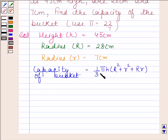Capacity of the bucket is equal to 1 by 3 pi h into R square plus r square plus R into r. Let us substitute the values.